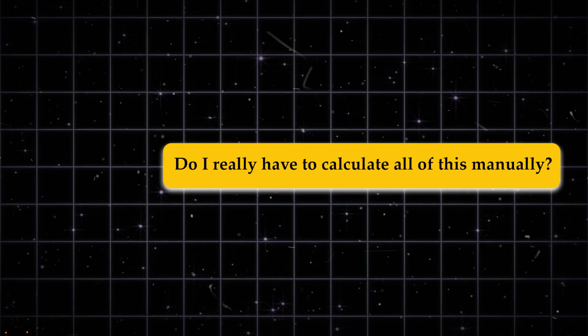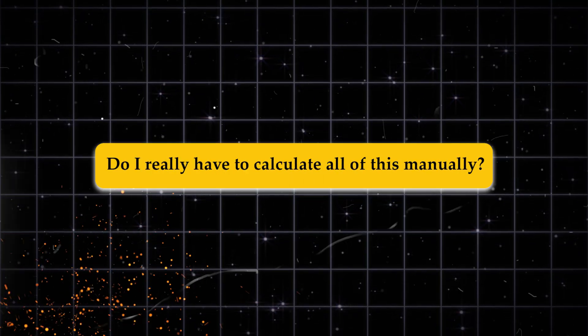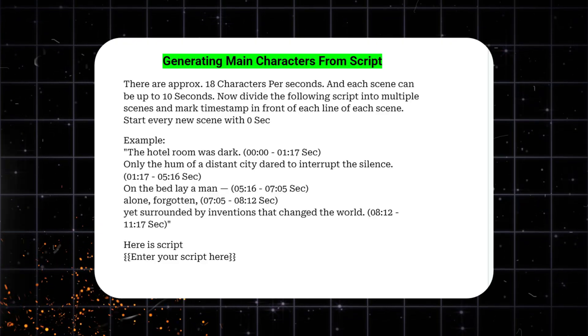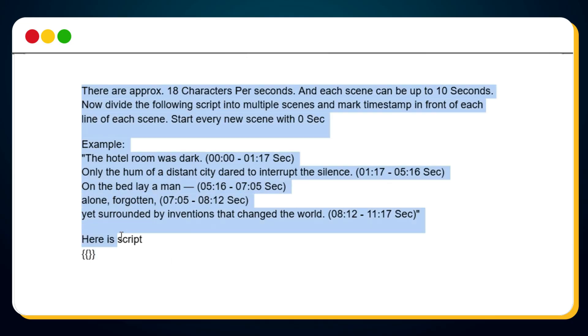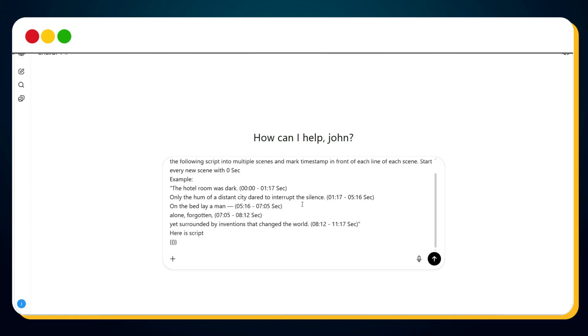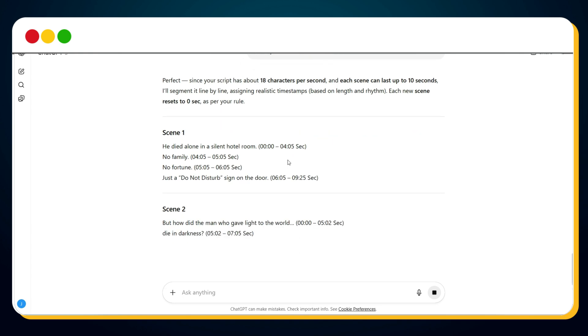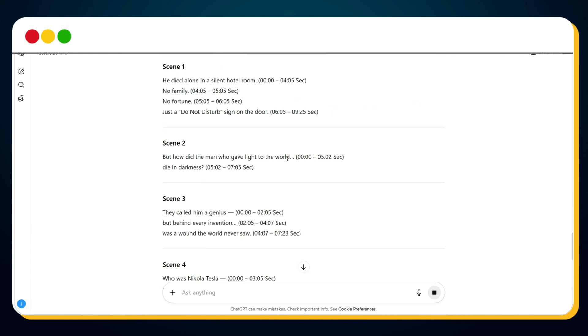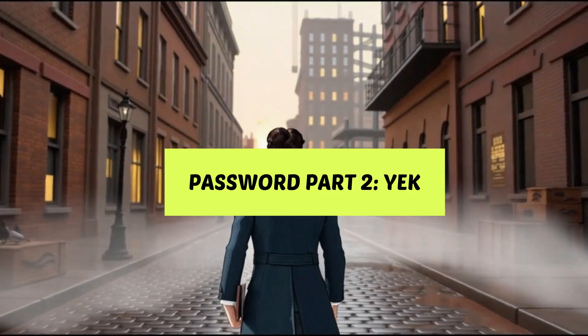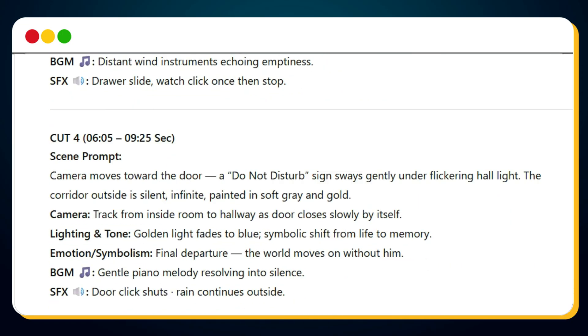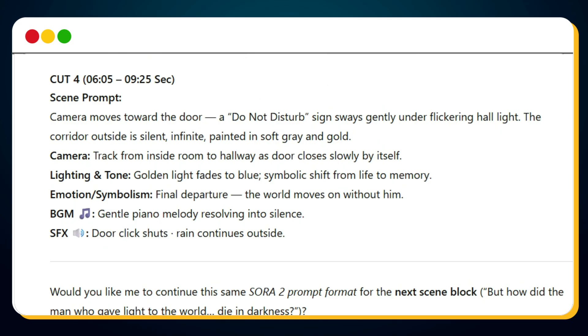Now you might be thinking, do I really have to calculate all of this manually? Not at all. I've created an AI prompt template that does this for you automatically. Just copy the prompt, open a new ChatGPT chat, paste it, and drop your script in the placeholder. Instantly, your entire script is divided into cinematic scenes with timestamps. Now that our scenes are perfectly structured, it's time to bring them to life by writing powerful prompts for each one to generate stunning 2D animation. We'll do that next, in chapter 4.